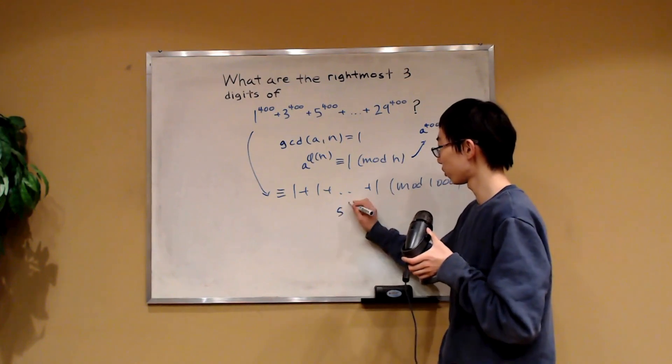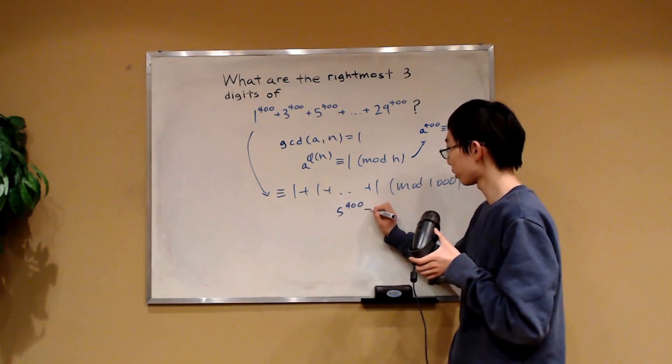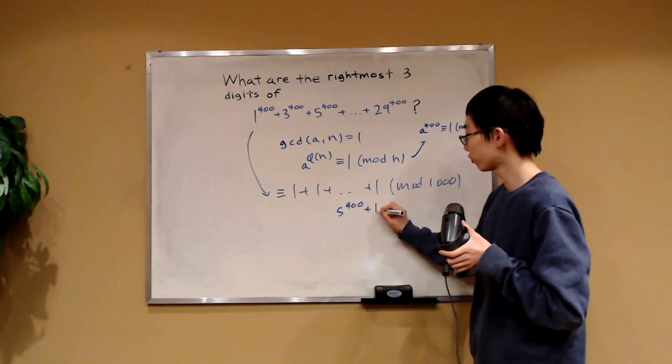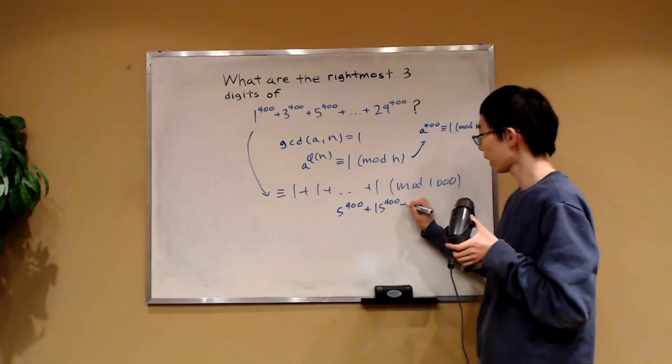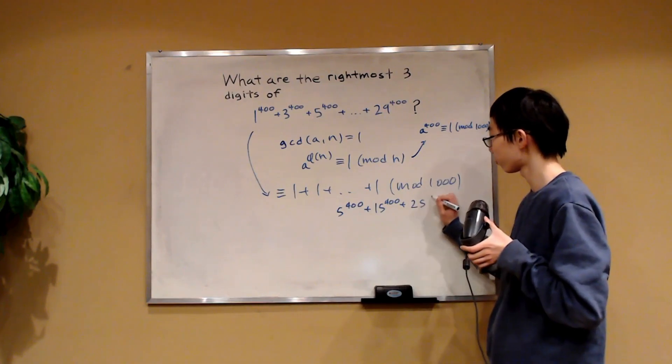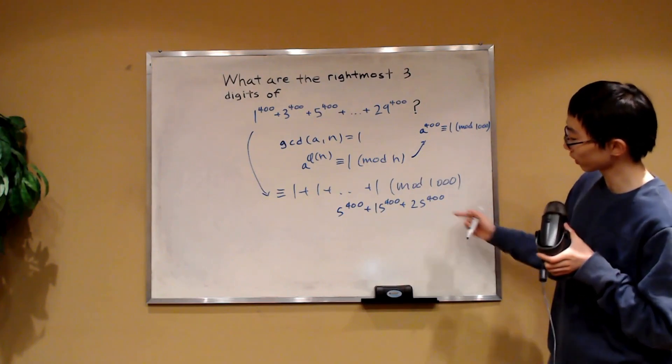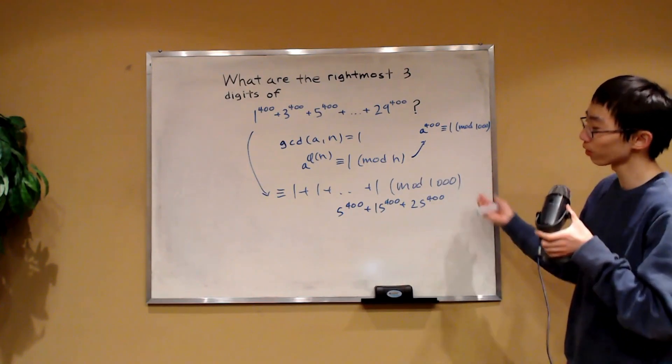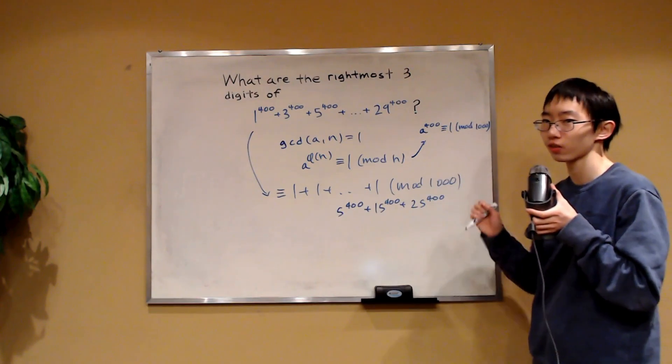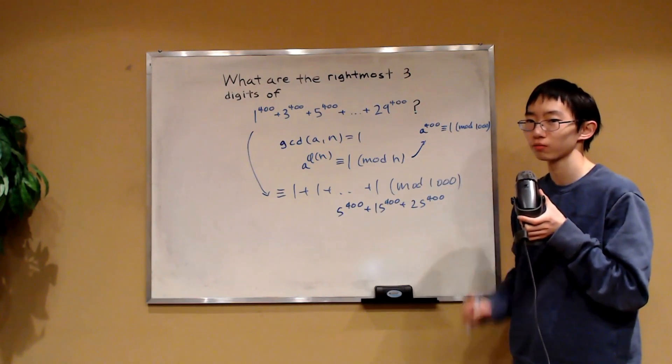That would be 5 to the 400 and then 15 to the 400 and there would also be 25 to the 400. They all contain 400 factors. Actually, this one contains more factors of 5 but the point is that they contain factors of 5 and thus they are not relatively prime to 1,000.